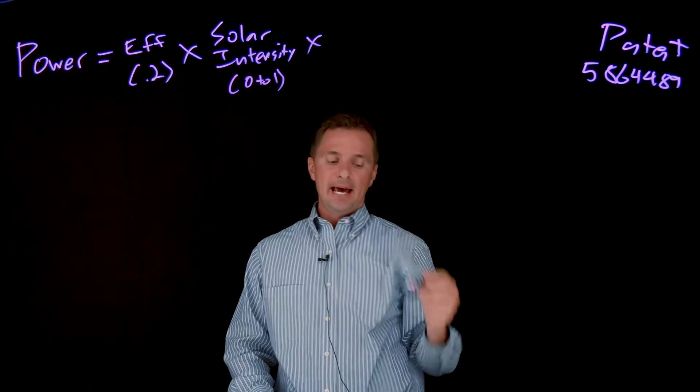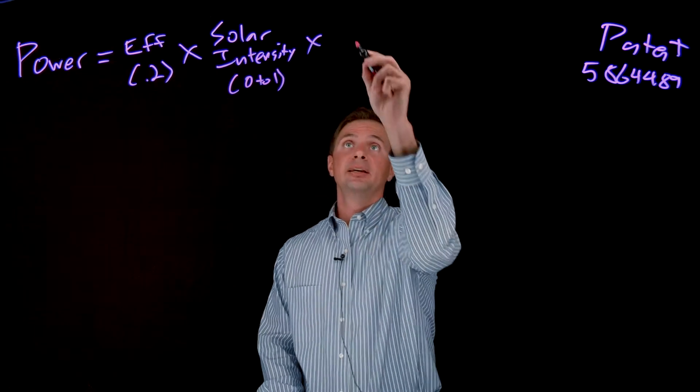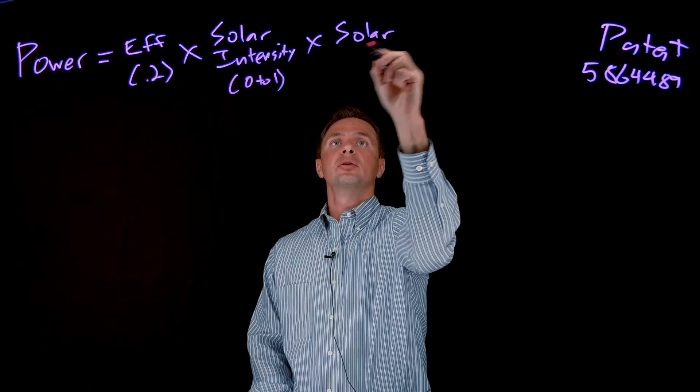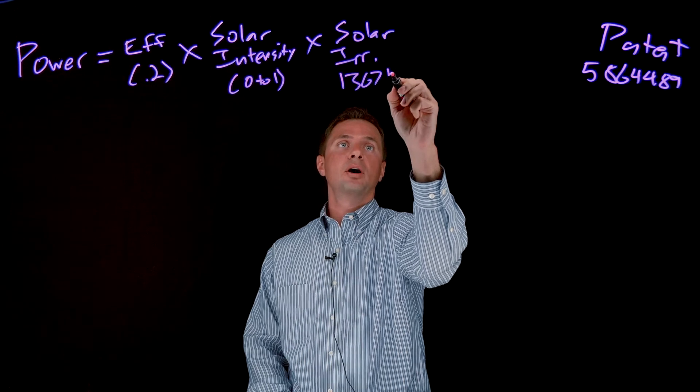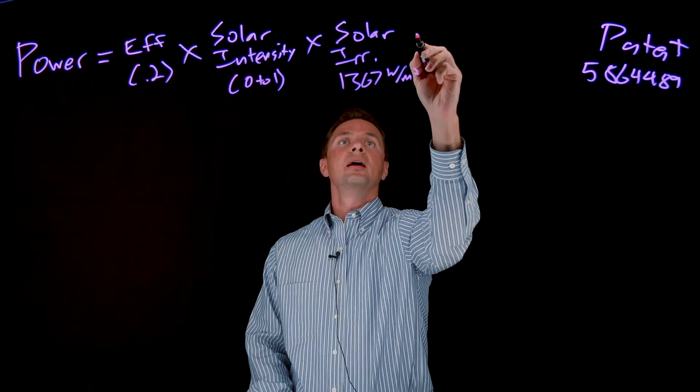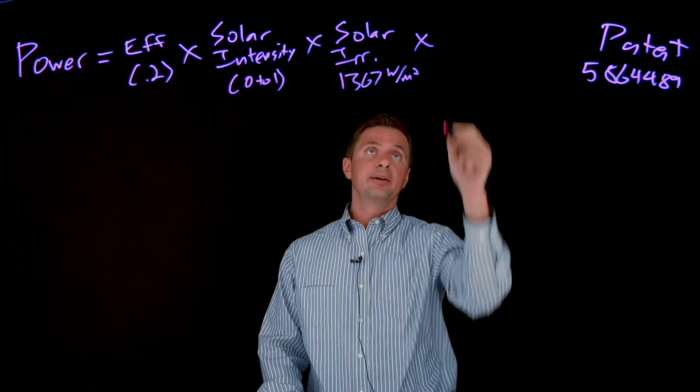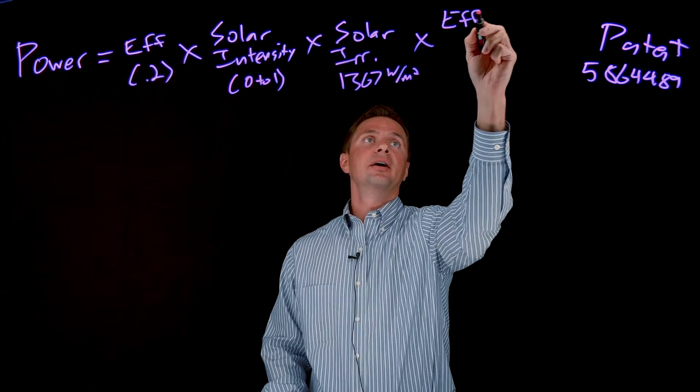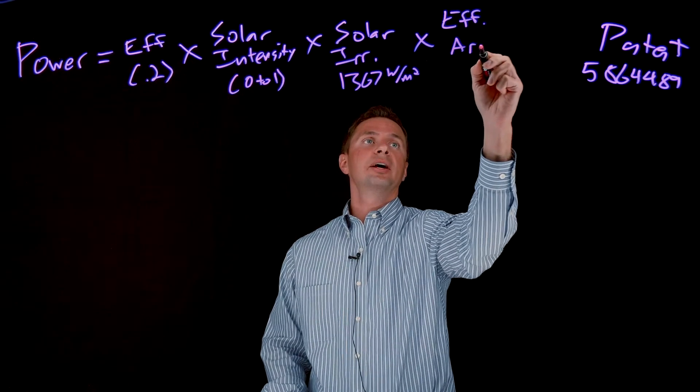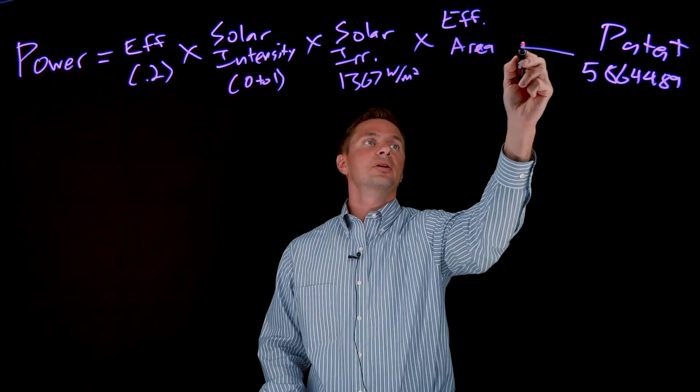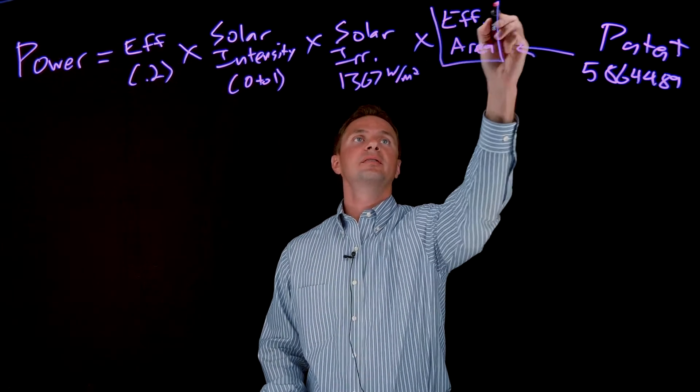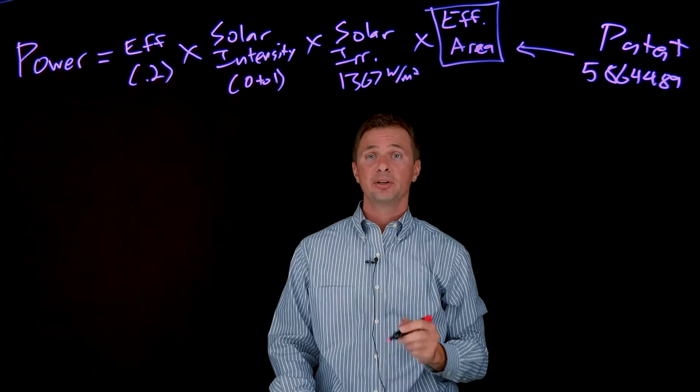And then you multiply that by the solar radiance. So the solar radiance is that value of 1367 watts per meter squared. And then you multiply that, finally, by the effective area of the solar panels that are exposed to the sun. And that is really where our patent comes in, this effective area. And that's what I'm going to talk about here in a little bit more detail.